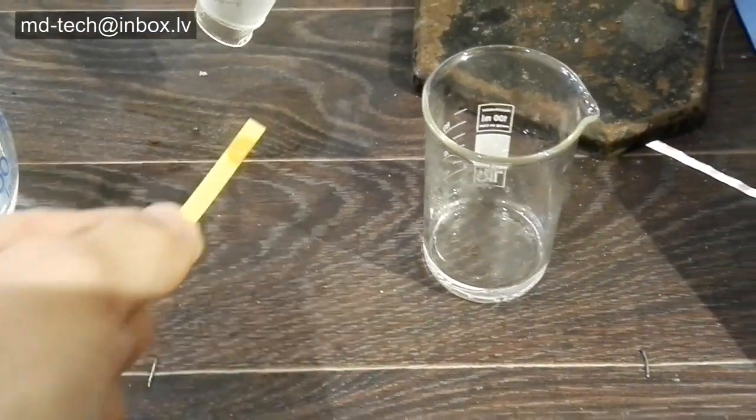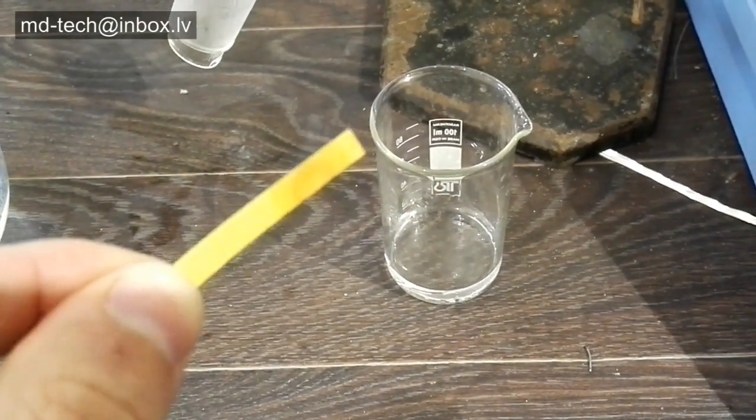To measure the acidity of the distillate use indicator paper. We have pure water.